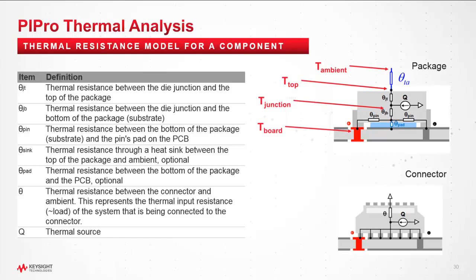This slide shows common terms in the thermal resistance model for a component: theta JA is thermal resistance between die junction and top of the package, theta JB is from die junction to bottom of the package connecting to the substrate, theta pin is thermal resistance between the bottom of the package and the pin pad on the PCB, along with theta sink, theta pad, and theta in Q denoting the thermal source.